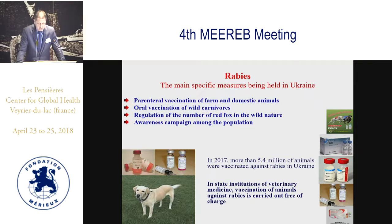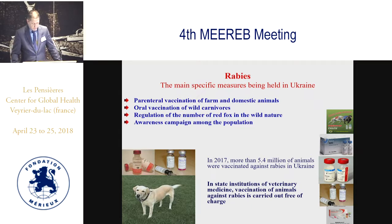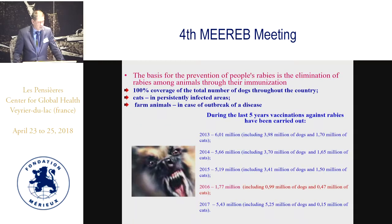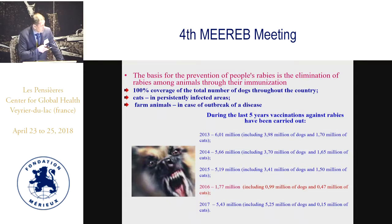Main specific measures include parenteral vaccination, oral vaccination of foxes, regulation of fox numbers, awareness campaigns, and main population control. This year we vaccinated more than 5.4 million animals. From this amount, more than 5.2 million were dogs and not many cats. Cat vaccination was over one million in previous years, 0.47 million last year, and only 0.15 million cats this year.